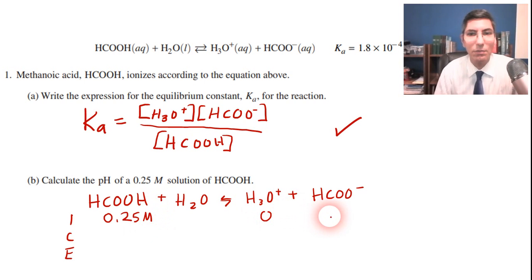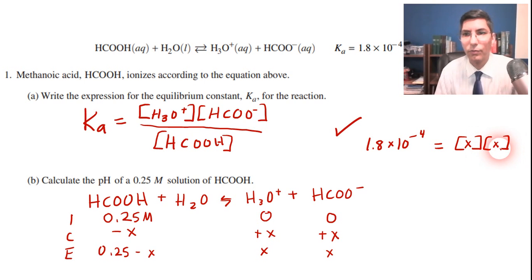We have initial change equilibrium for the 0.25 molar, that is the initial concentration of methanoic acid. We'll assume it's practically zero for those two. So the change is going to be minus x and plus x and plus x. So your equilibrium concentrations are 0.25 minus x, x and x. We're going to plug these values into the equilibrium constant expression from Part A. So Ka which the problem tells us is 1.8 times 10 to the minus fourth equals x times x which is x squared all over 0.25 minus x.